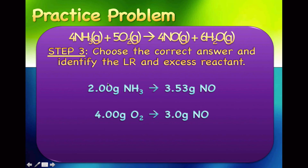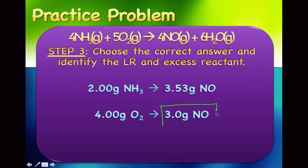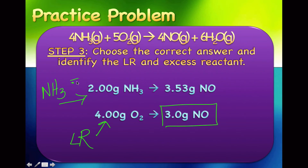To summarize: 2 grams of ammonia gave us 3.53 grams of NO, and 4 grams of oxygen gave us 3 grams of NO. We always choose the smallest answer, because that's when the limiting reactant runs out. The correct answer is 3 grams of nitrogen monoxide, which tells us that oxygen is the limiting reactant, and ammonia is the excess reactant.